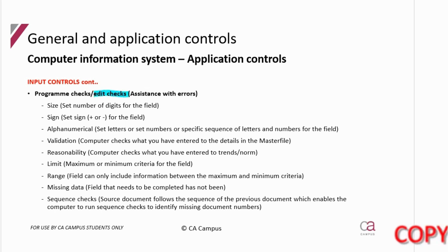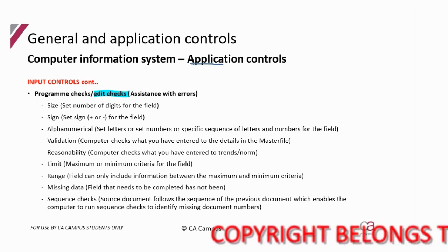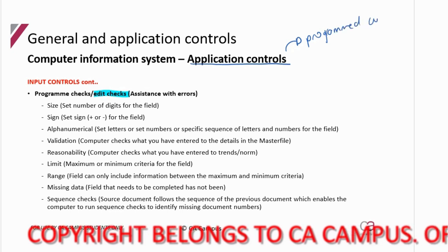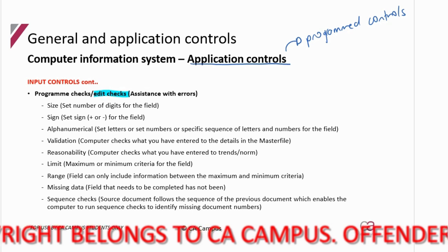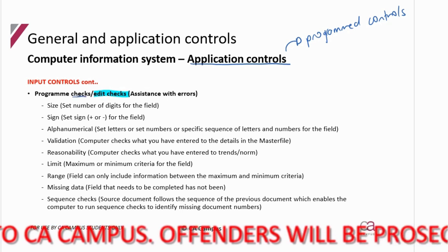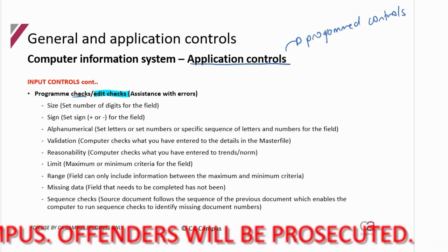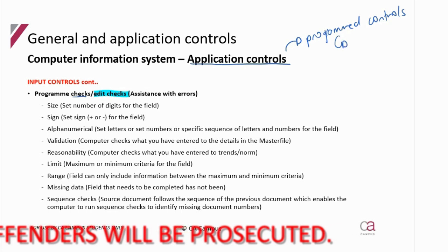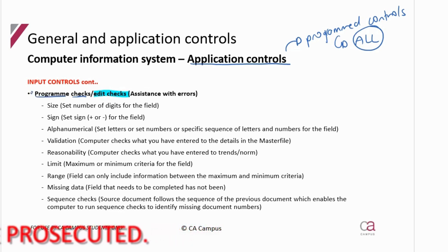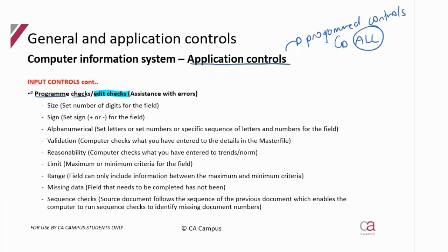These are also referred to as edit checks. I actually prefer you to use 'edit checks' here because application controls — also called program controls or programmed controls — are controls programmed within a system, i.e., computer controls. Program checks are a specific type of computer control. Often a question will say 'program controls' and you are supposed to discuss all that are available, but you might limit it just to these because you see the word 'program.' That's why I say rather look at these as 'edit checks,' and often your questions will say 'edit checks' — then you know it's just this list. When you're looking at 'programmed,' you're looking at everything, so don't ignore the rest.